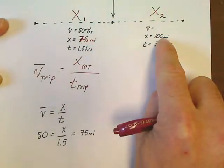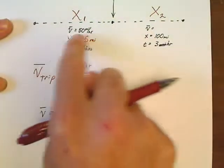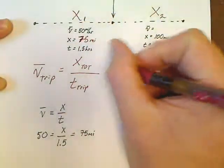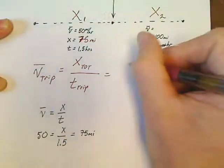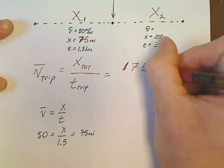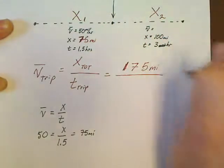This is great. We've already solved for our total distance. What is the total displacement in this problem? Well, X total is 175 miles. We've just got that.